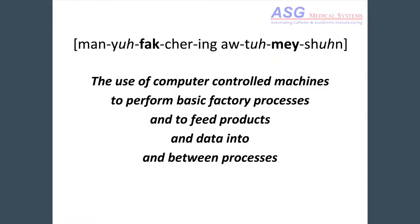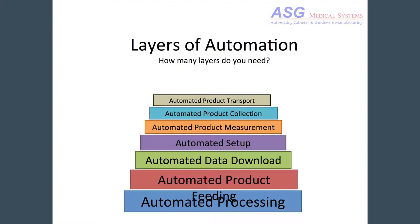So, manufacturing automation. Let's start with a simple definition: the use of computer-controlled machines to perform basic factory processes and to feed products and data into and between processes. To extend the definition a bit, we're going to talk about layers of automation. The more layers you have, the more automated your factory, and that leads to all the revolutionary effects I'll be talking about shortly.